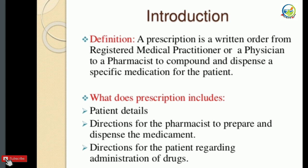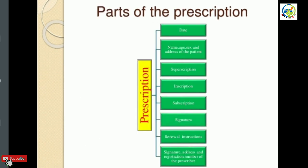We can say that a prescription is a written order form from a doctor or medical practitioner to a pharmacist — he should dispense a specific medicine to the patient. The different parts of prescription are: first, date; second, name, age, sex and address of the patient; third, superscription; fourth, inscription; fifth, subscription; sixth, signature; seventh, renewal instruction; and eighth, signature, address and registration number of the prescriber.